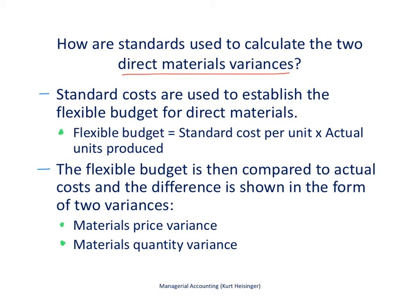We're going to start by talking about the standard costs used to establish the flexible budget. In a separate video we describe how these standards are established, and in particular how the standard cost per unit is established. Here we'll review that the flexible budget is calculated by taking the standard cost per unit of product times the actual number of units produced. The flexible budget is prepared after the period has gone by, and we compare it to actual costs, breaking out any differences into two variances.